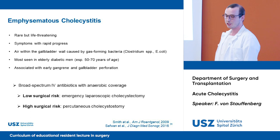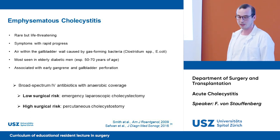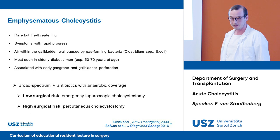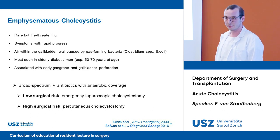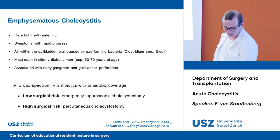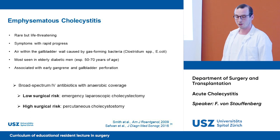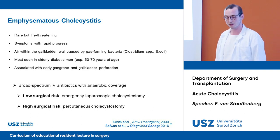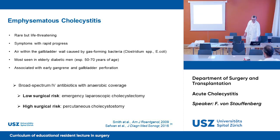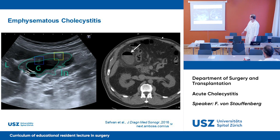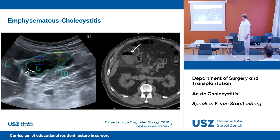A rare but life-threatening complication is emphysematous cholecystitis. Symptoms progress rapidly and there is air within the gallbladder wall caused by gas-forming bacteria. It is mostly seen in elderly diabetic men and is associated with early gangrene and perforation. We have to administer broad-spectrum IV antibiotics with anaerobic coverage, and in low surgical risk patients we should do emergency laparoscopic cholecystectomy. In high-risk patients, we should do percutaneous cholecystostomy. On sonography and CT, you can see air in the gallbladder wall and lumen.